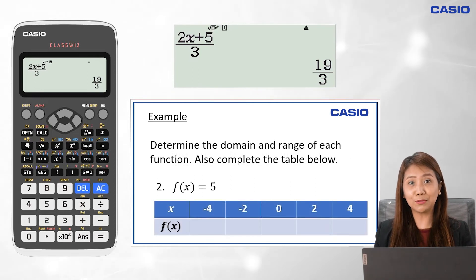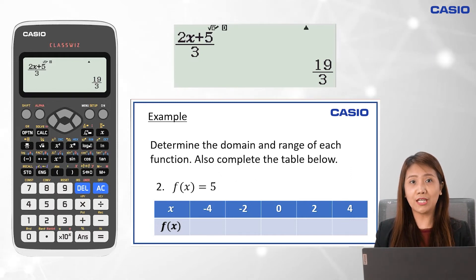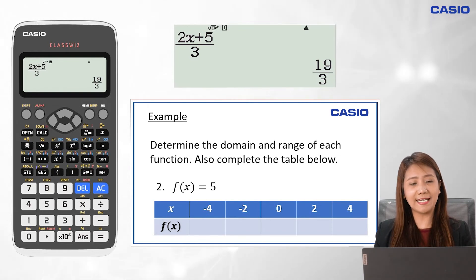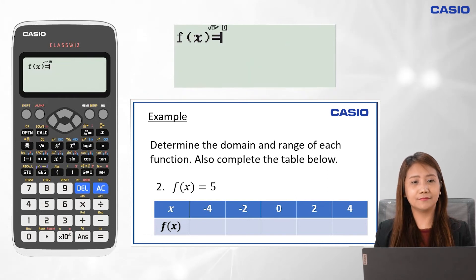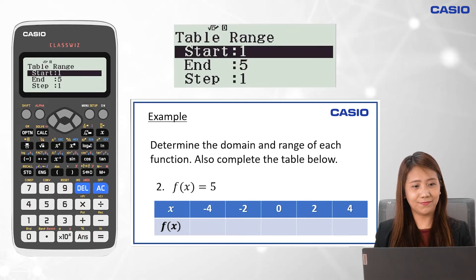This time, let's have our next example. We are asked to determine the domain and range of each function, and also to complete the table below. Let's have the function f of x equals 5. Let's complete the table using Casio ClassWiz before identifying the domain and range. First, we press Menu and 9. Next, we input the function, which is 5, then press equal sign twice, and it will lead us to the table range.